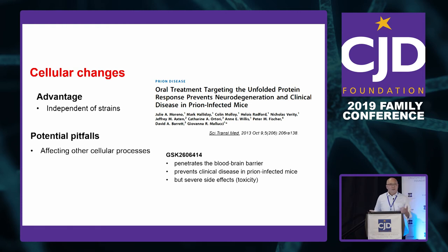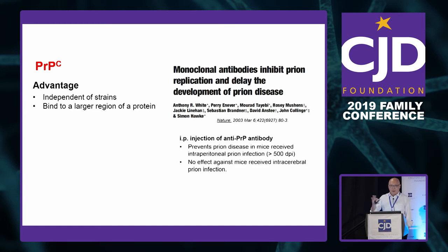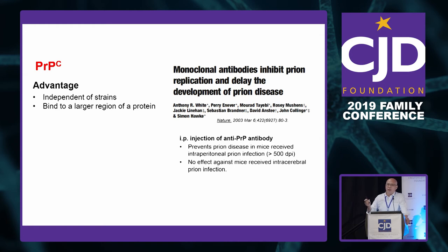The third target is against PRPC. The best work so far — besides the ASO, which is very promising and you'll hear about very soon — has been done with antibodies from John Collinge's lab. They gave the antibody and it can effectively prevent development of prion disease if the prion is delivered through the peripheral route. But if you directly inject prion into the brain, it doesn't work, because the antibody cannot cross the blood-brain barrier. Also, some antibodies that bind PRP may lead to neurotoxicity.